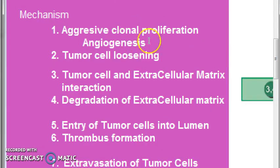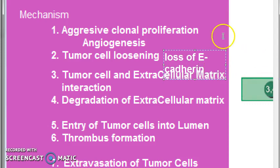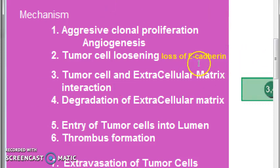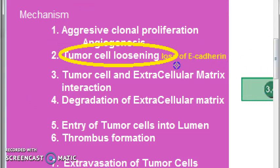Step one — aggressive clonal proliferation: angiogenesis happens with formation of new blood vessels. Step two — tumor cell loosening: this occurs because of loss of E-cadherin. E-cadherin levels decrease and hence the tumor cells become loose.